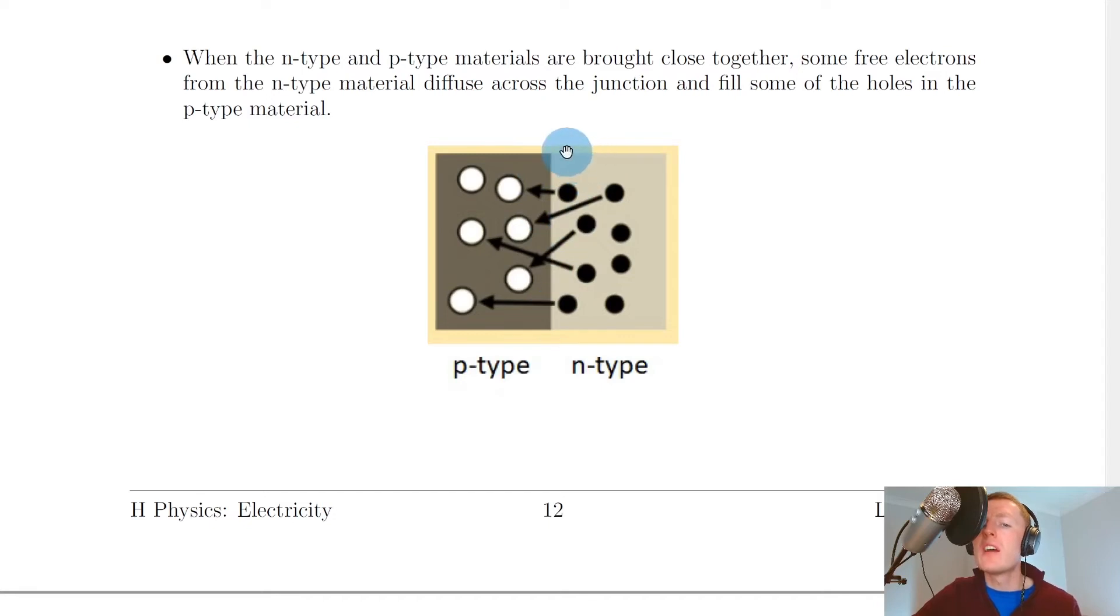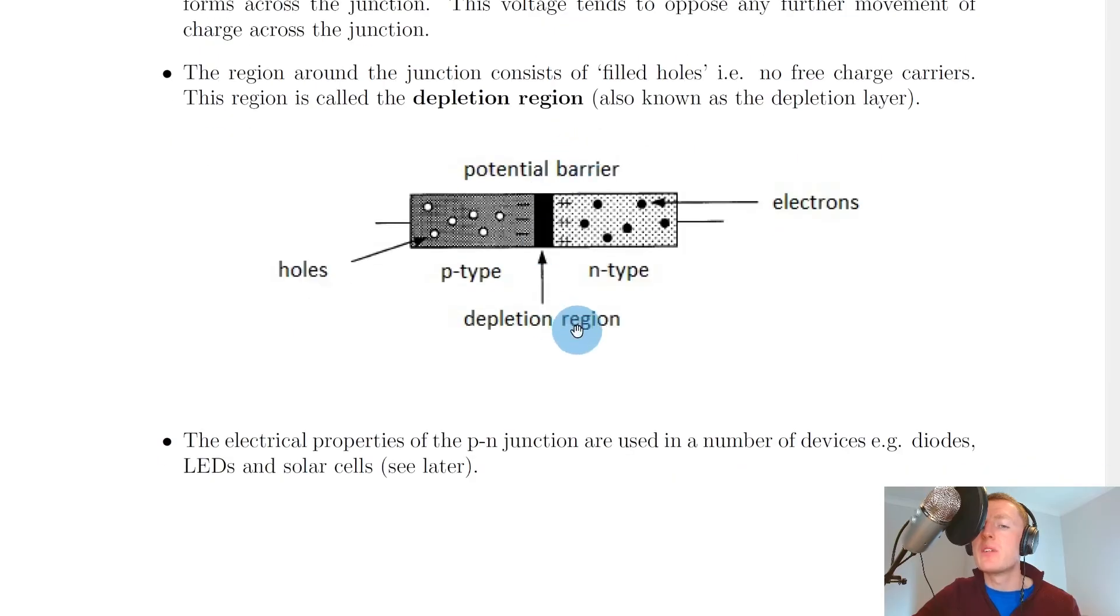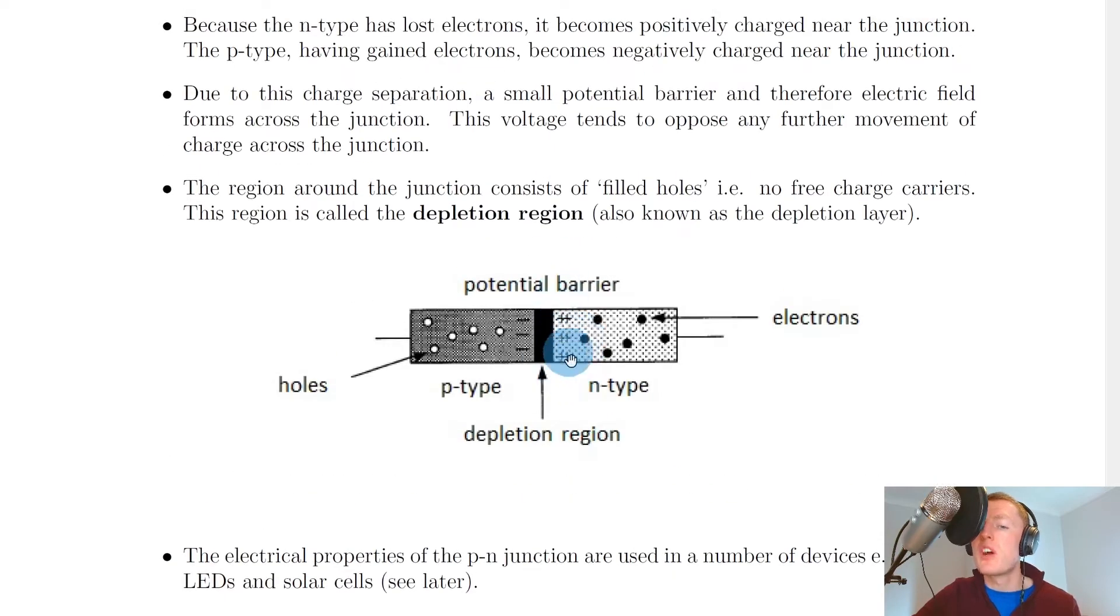On this side of the junction, we've actually got an absence of electrons, which we could call a positive charge. So this side will become positively charged. We've got this in the diagram down here - a positively charged region on the right and a negatively charged region on the left.